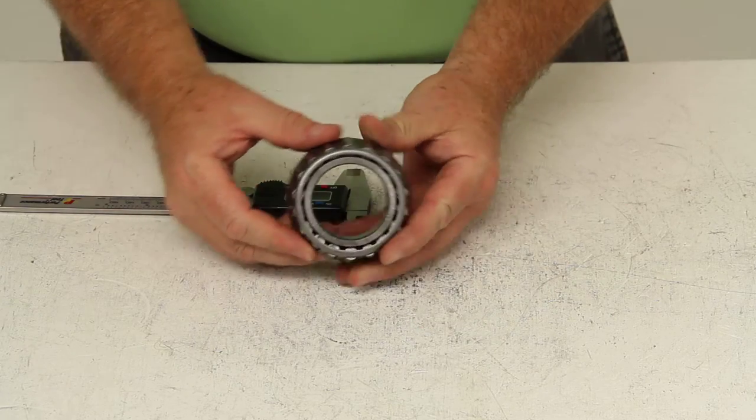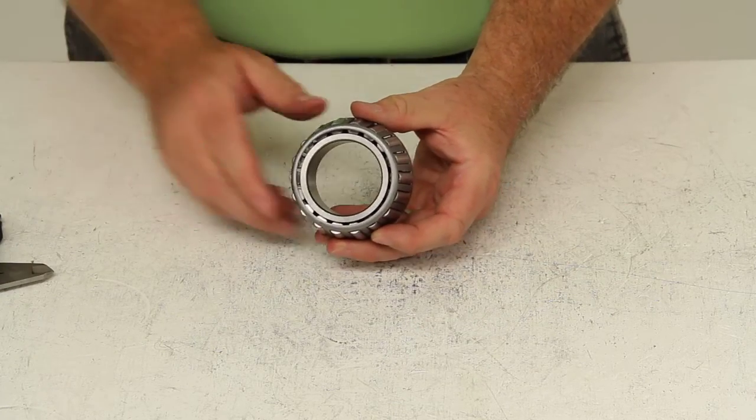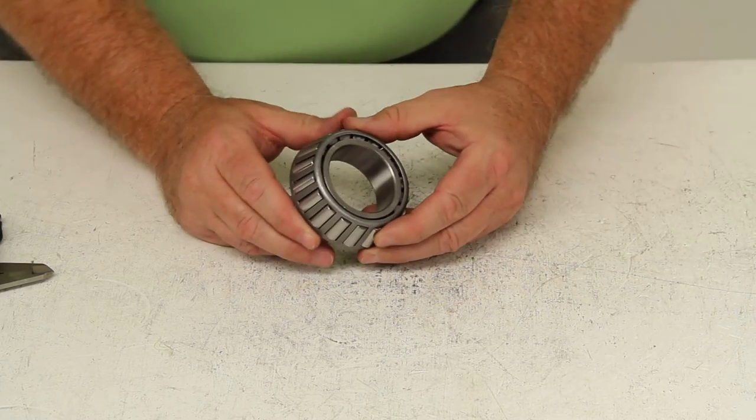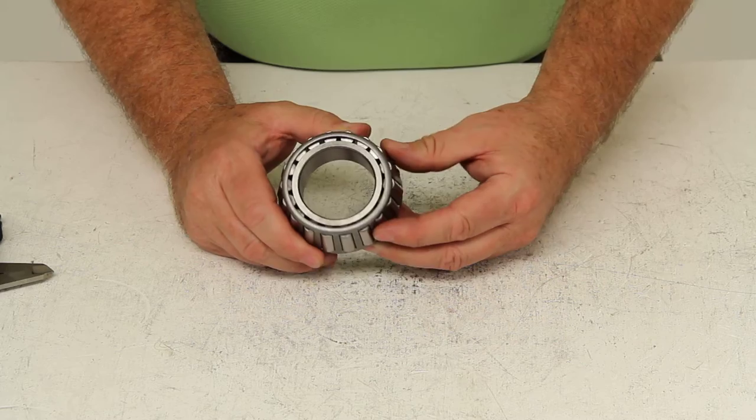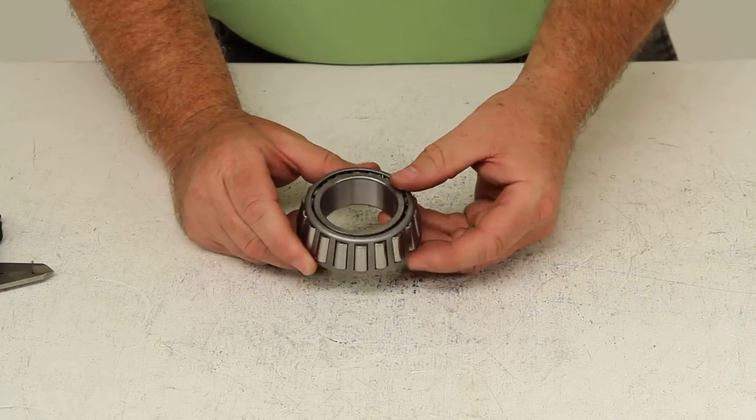Today we're going to review part number 25580. This is the TruRide trailer wheel bearing. It can be used as an inner or outer bearing.